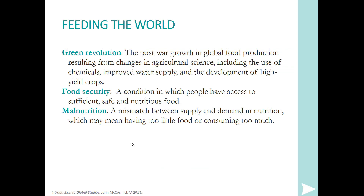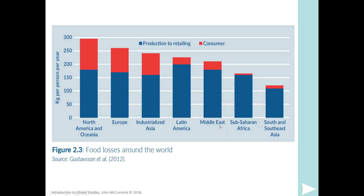One key point: there is enough food to feed the world — the problem is access. There is also enough clean water for the world — again, the problem is access. Malnutrition is a mismatch between supply and demand: too little food or consuming too much — a problem seen even in America today. Food losses around the world from production to retailing are another important topic, and these may be issues you want to understand and write about for your paper.